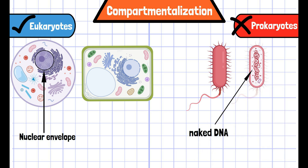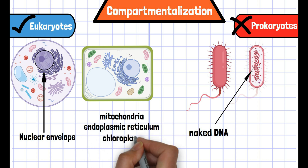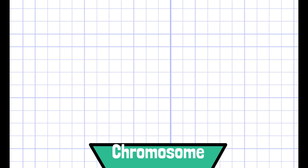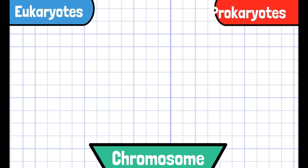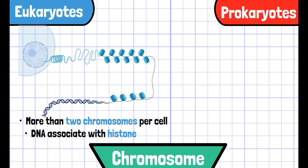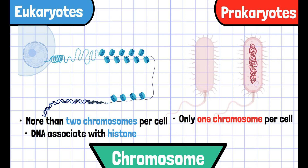Other than the nuclear envelope, mitochondria, endoplasmic reticulum, chloroplasts, and lysosomes are missing in prokaryotes because of the absence of compartmentalization. There are also a few differences in chromosomes. Usually, more than two chromosomes are present in eukaryotes, and they are often associated with histone proteins. However, the number of chromosomes in prokaryotes is usually one, and they are not associated with histones.